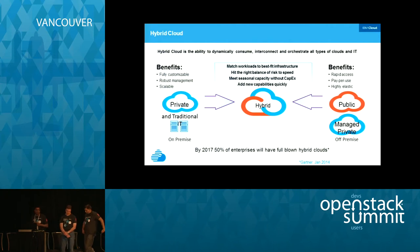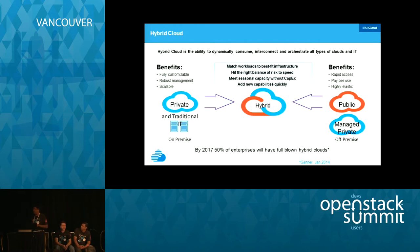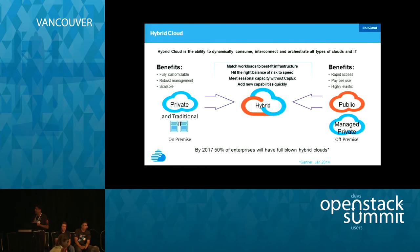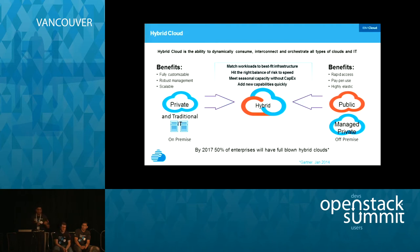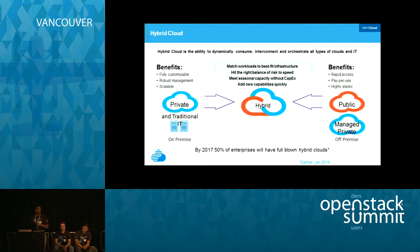Hybrid cloud is the ability to consume, interconnect, and orchestrate across different types of cloud and traditional IT. Throughout multiple sessions we've seen why this is important — where workloads can take the best-fit infrastructure and achieve the right balance of risk and speed. Various surveys project how hybrid clouds will get adopted, and one particular data point from Gartner says that by 2017, half the enterprises will be using full-blown hybrid clouds.